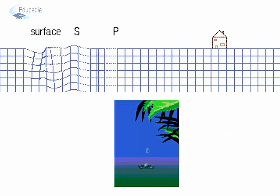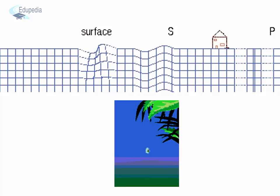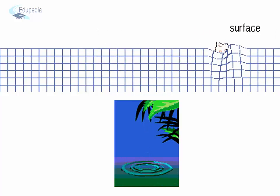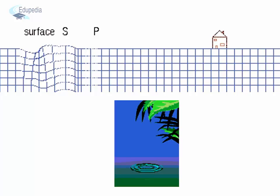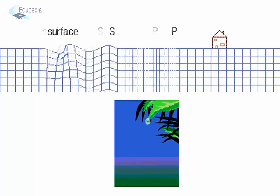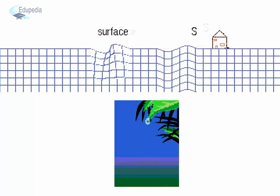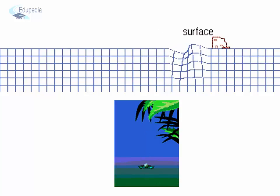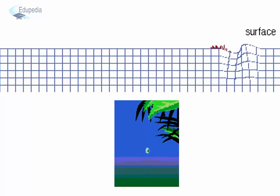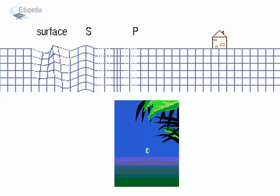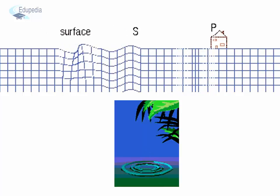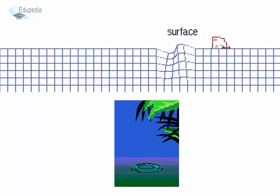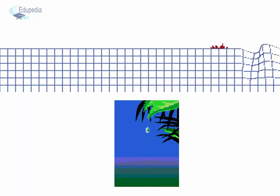If you observe the animation, you will find all types of waves: the primary waves first to reach, S waves second, and the surface waves third. Surface waves cause maximum destruction on the surface. These waves are similar to waves produced on water in the form of ripples.